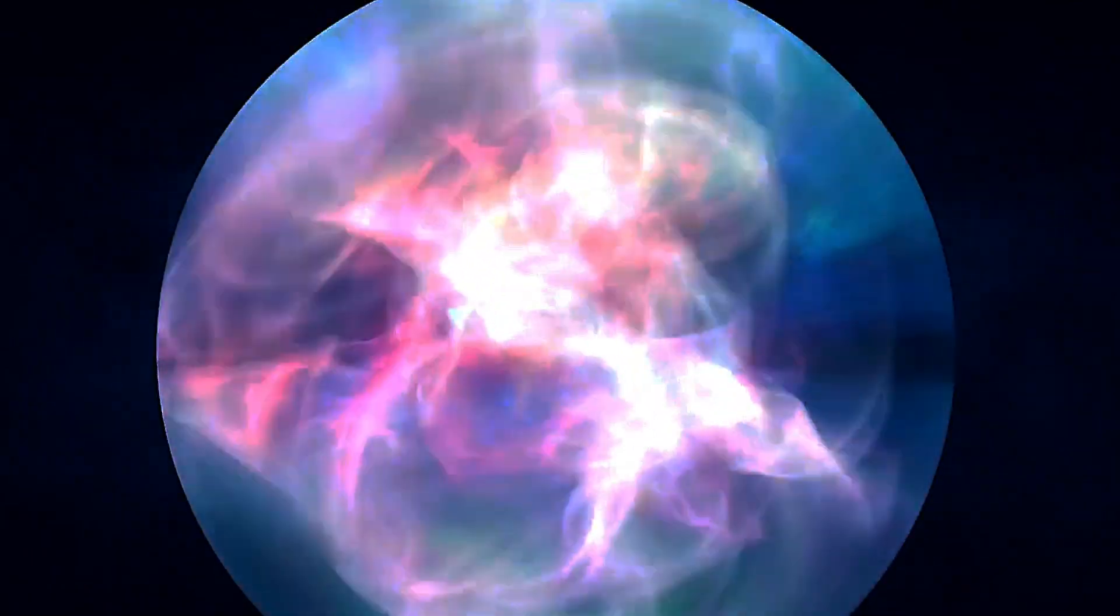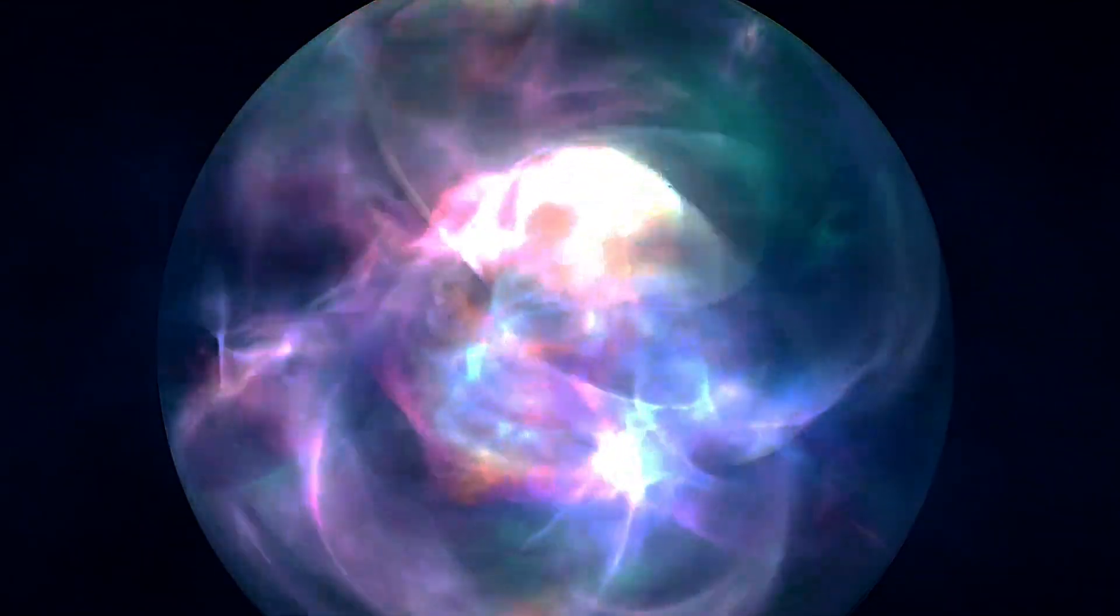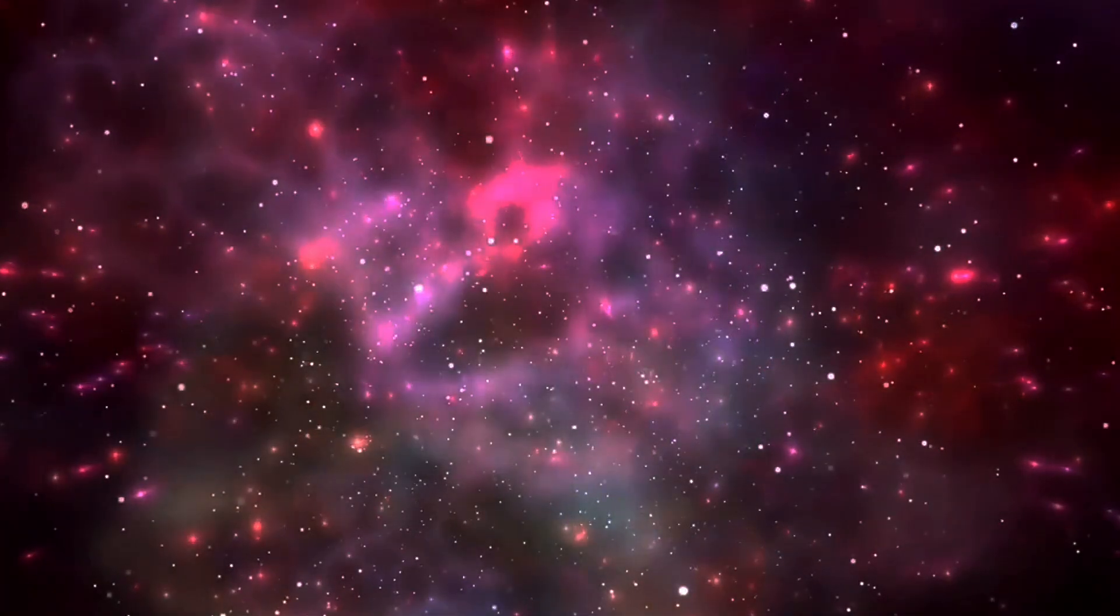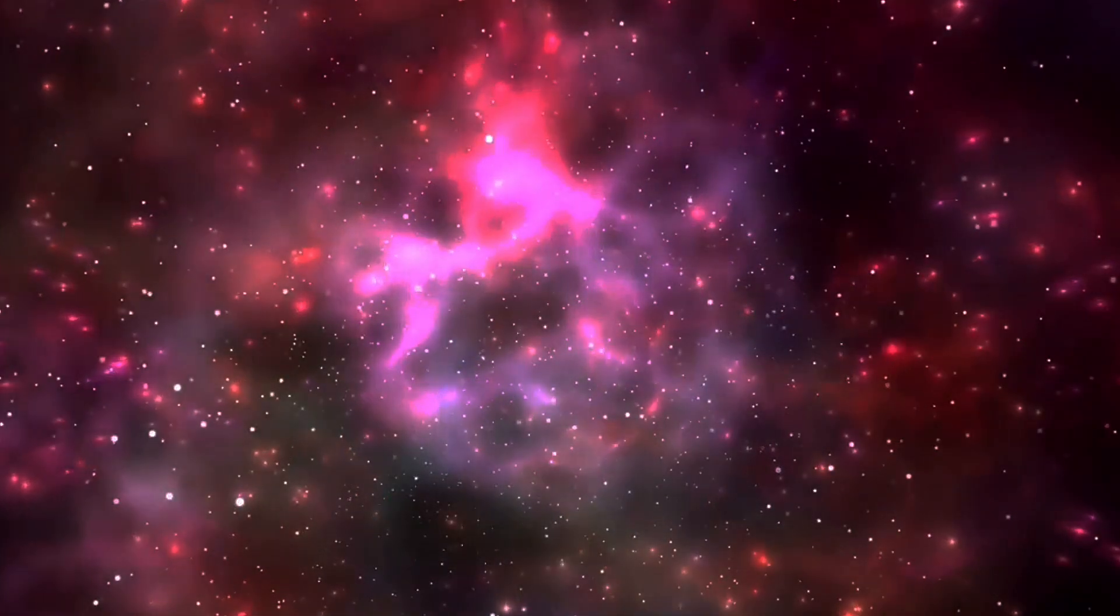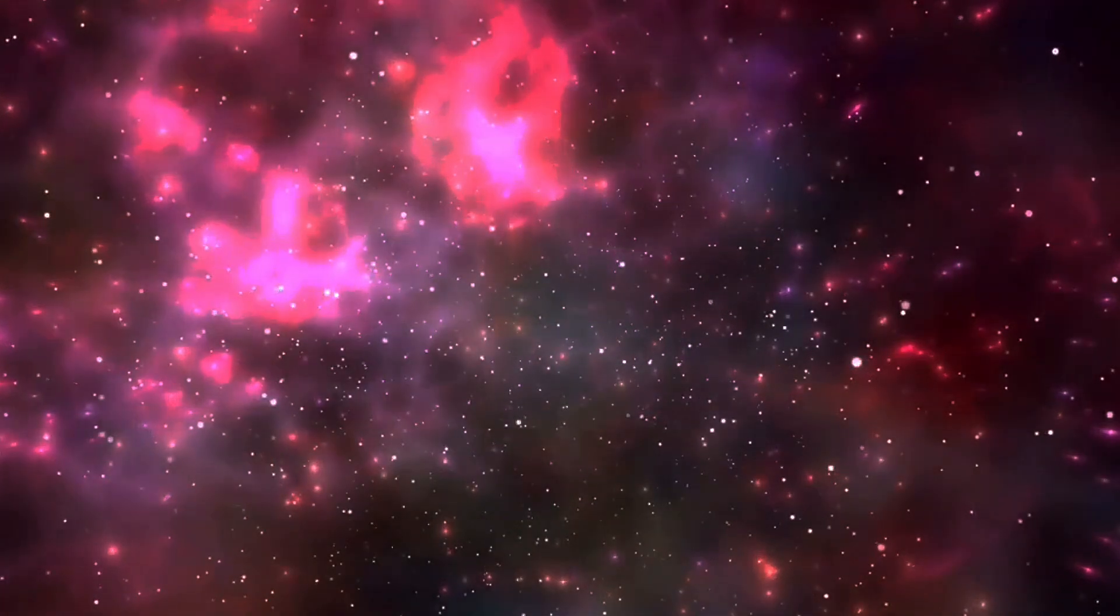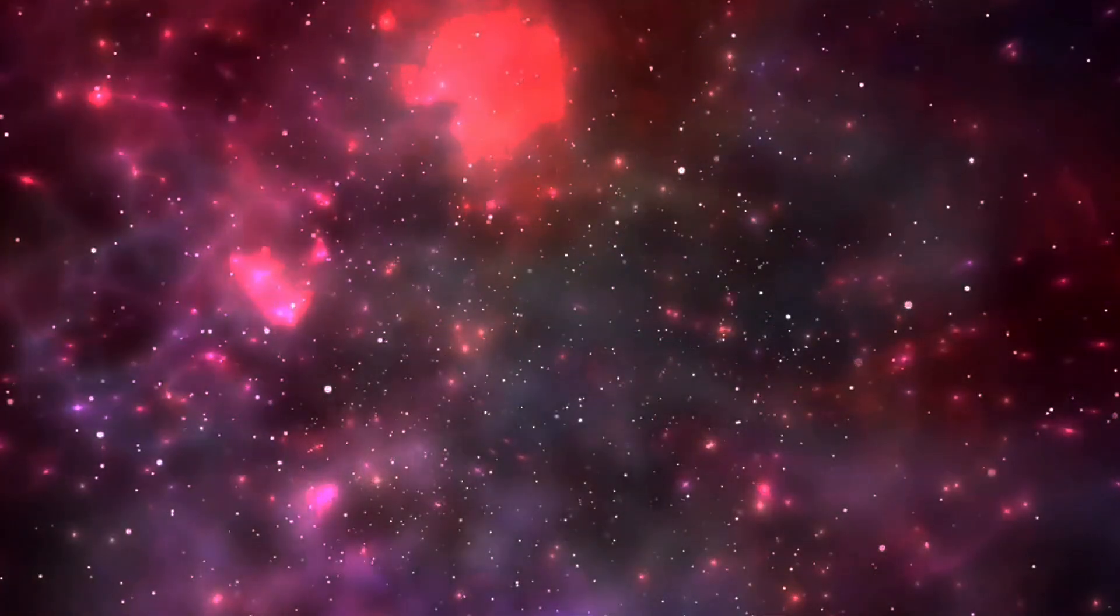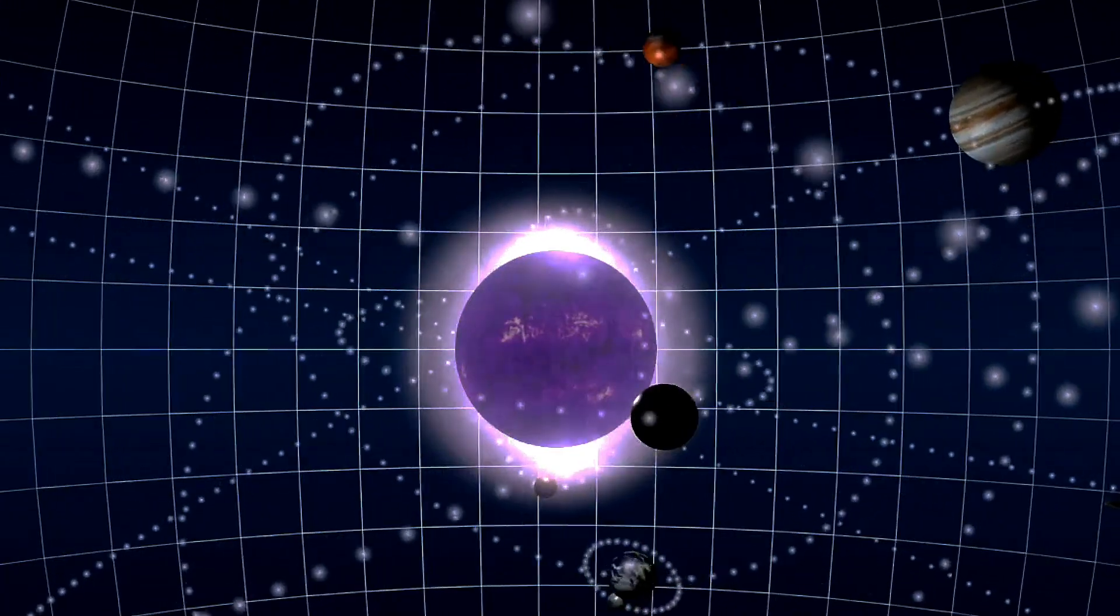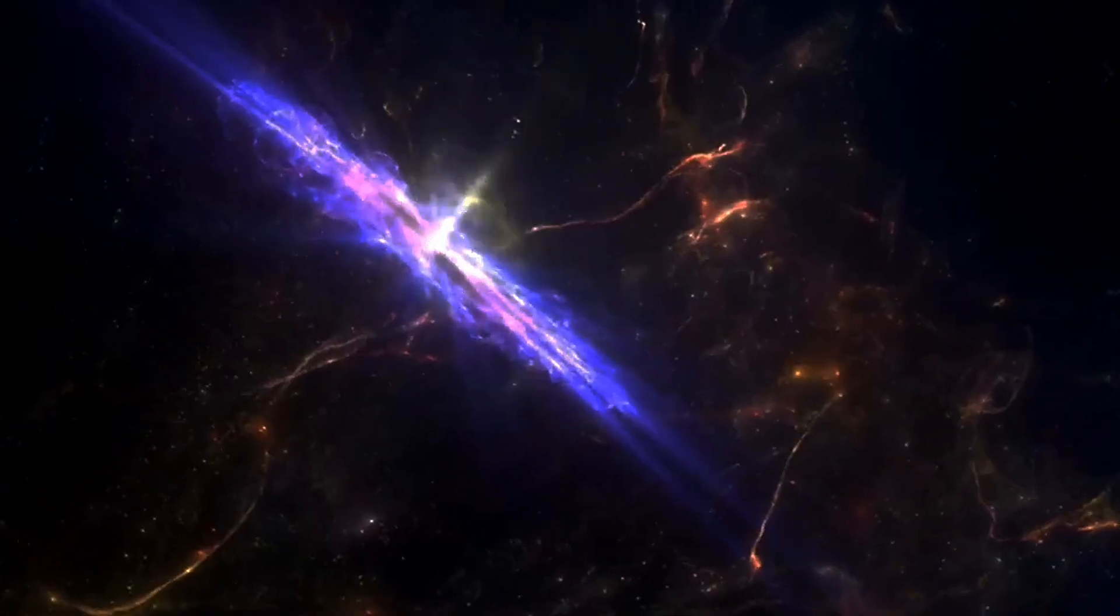Sure, it's true that when we look at the universe 12,000 years after the start of the hot Big Bang, the average temperature of the universe is 158,000 Kelvin and the average energy of each photon is 13.6 electron volts. But under those conditions, 100% of the atoms in the universe remain ionized.